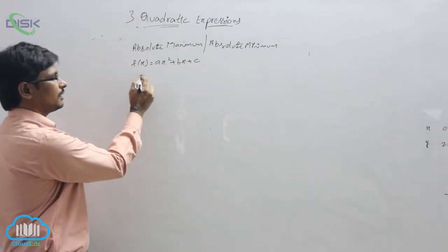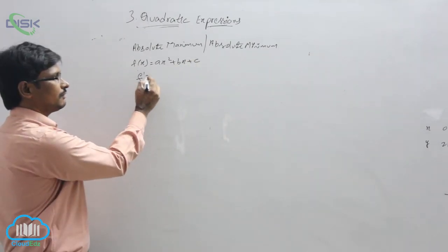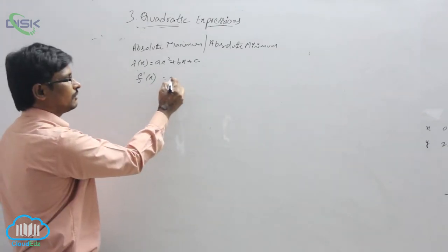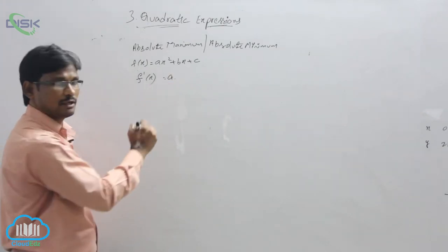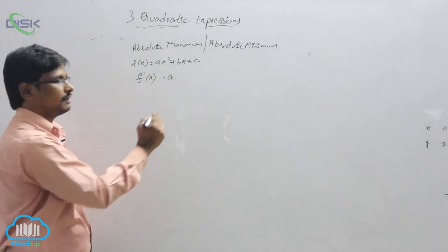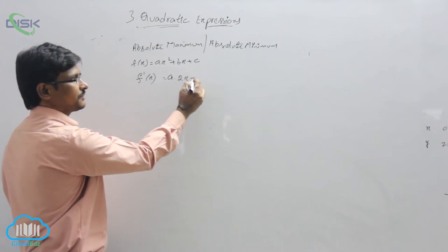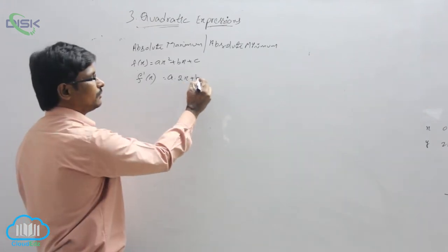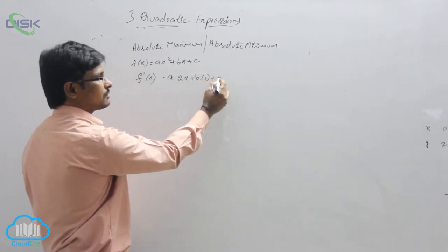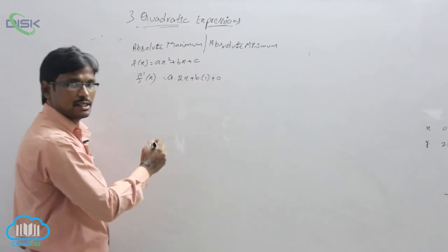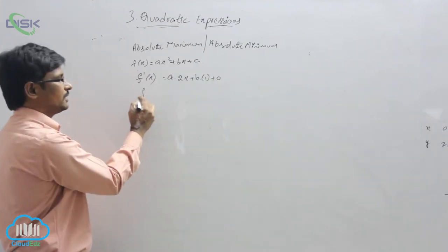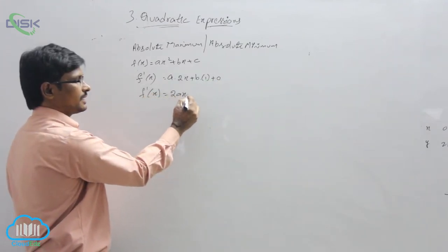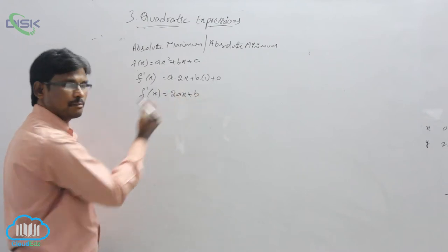Find out the derivative of this. f dash of x: we know that x squared derivative is 2x, plus b times x derivative 1, plus constant derivative 0. So f dash of x equals 2ax plus b.